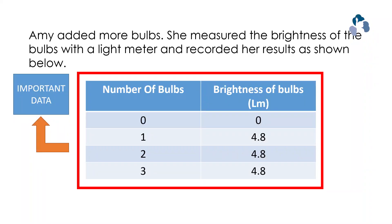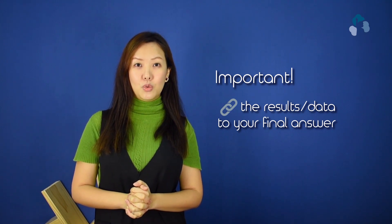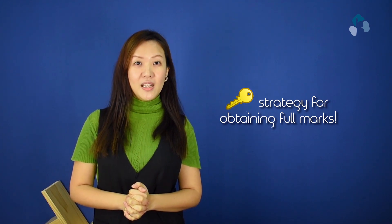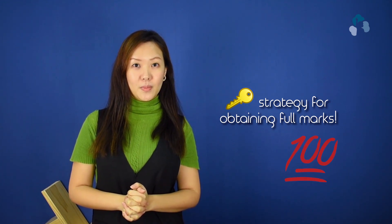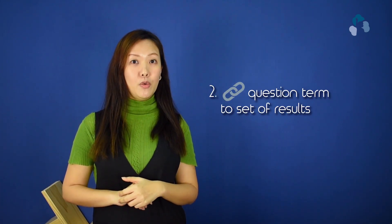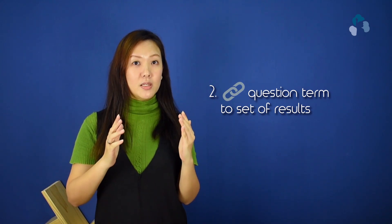Experimental questions always come with a set of data, or what is known as the results. It is very important to link the results to your final answer — that is the key strategy to obtaining full marks for that question. So how do you link the results to the experimental question? Step two is to link that key question term to the set of results, and finally arrive at the final answer.